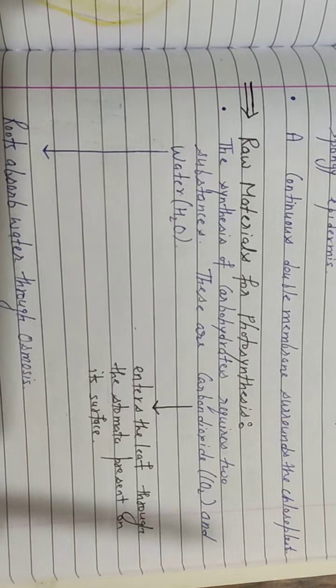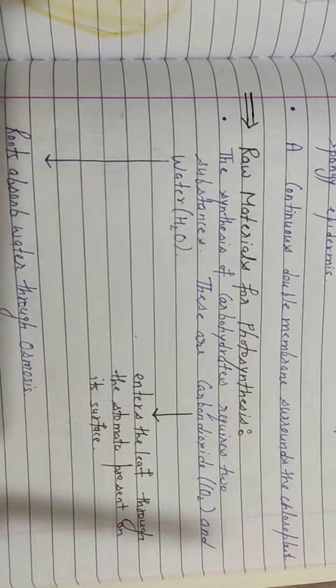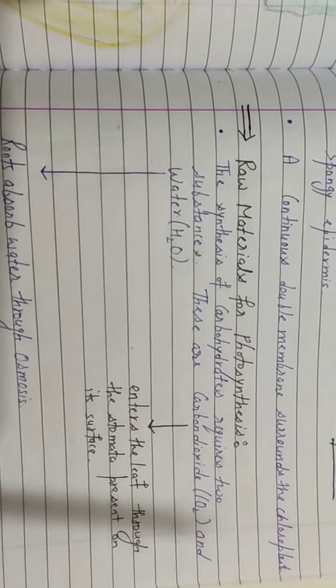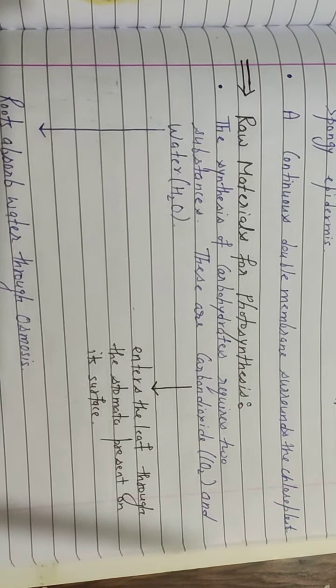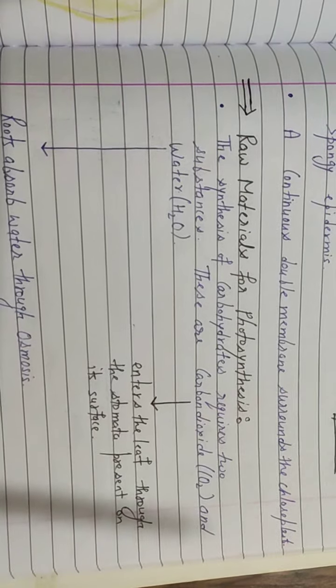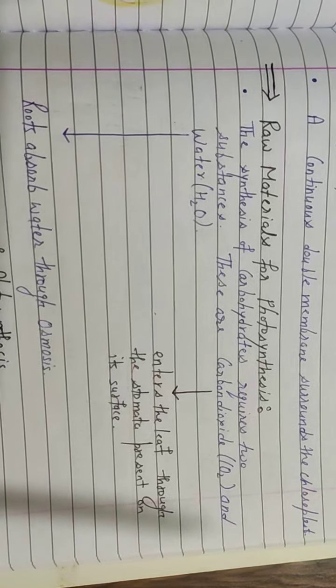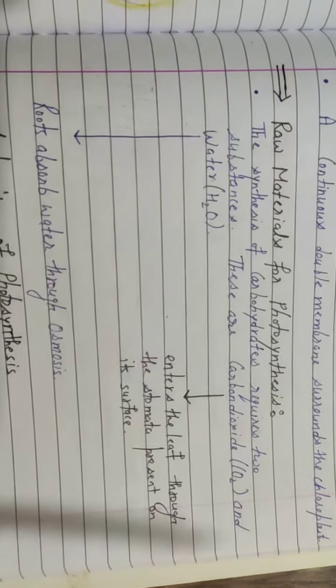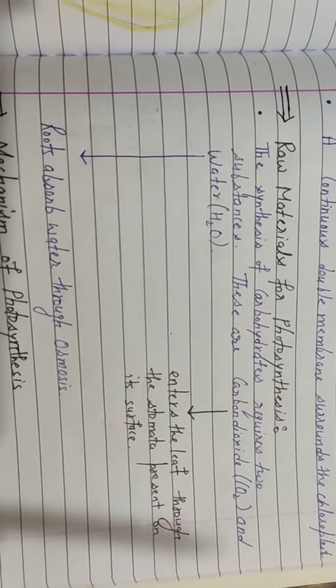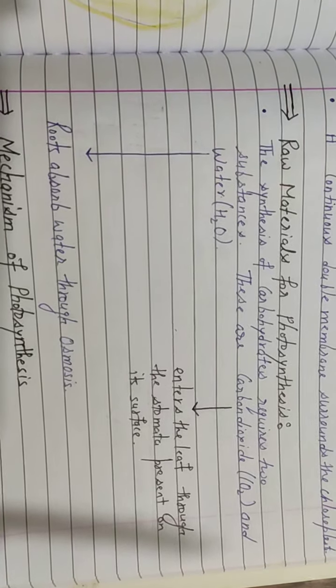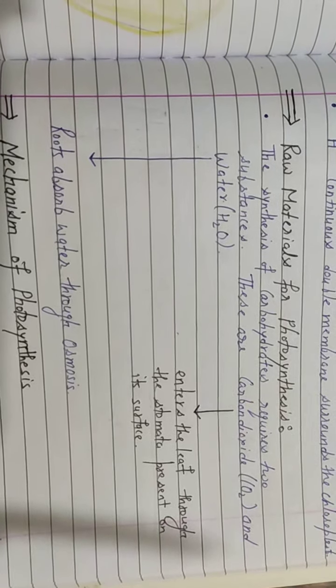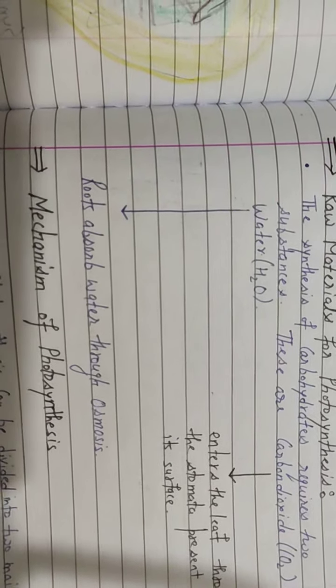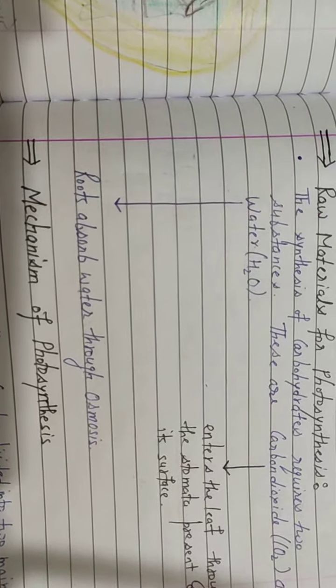Now, the raw materials for photosynthesis. The synthesis of carbohydrate, that is glucose, requires two substances. The first one is carbon dioxide and the second one is water. Carbon dioxide enters the leaf through the stomata present on its surface. Stomata are pore-like structures which are present on leaf surface responsible for gaseous exchange.